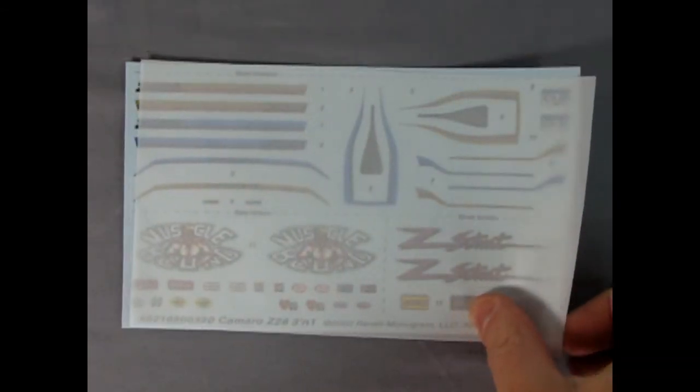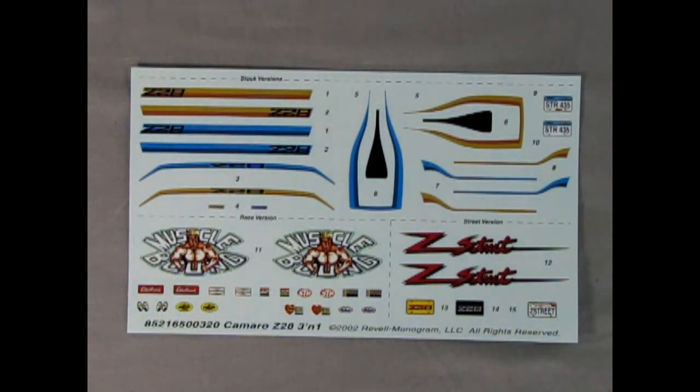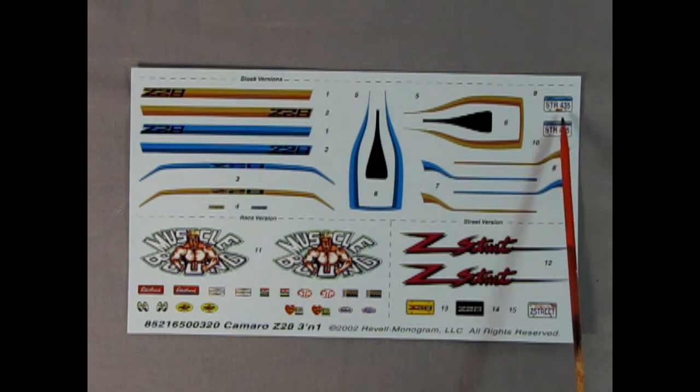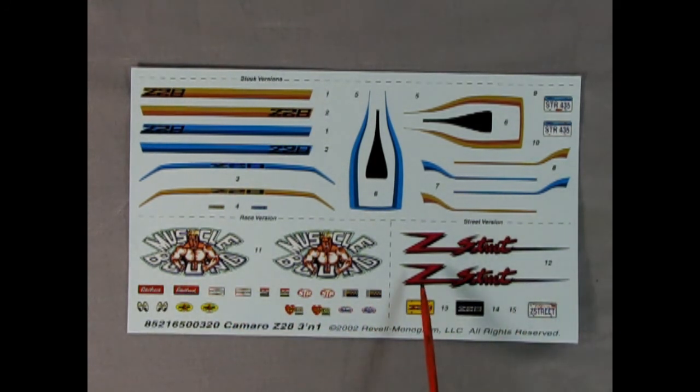And now the moment you've been waiting for here we have our decal sheet and I've just removed the paper so we can get a true registration of the colors. Look at this you get two different stripes. You get the brown Z28 stripe or the blue version for however you want to paint this and then we've got these nice STR 435 license plates. So that again would be street and then down here we've got for a drag racing version the muscle bound decal for the door as well as all the different sponsors. And finally we have for the street machine version our Z street side decals with our Z28 license plates in two different colors and a California Z street.